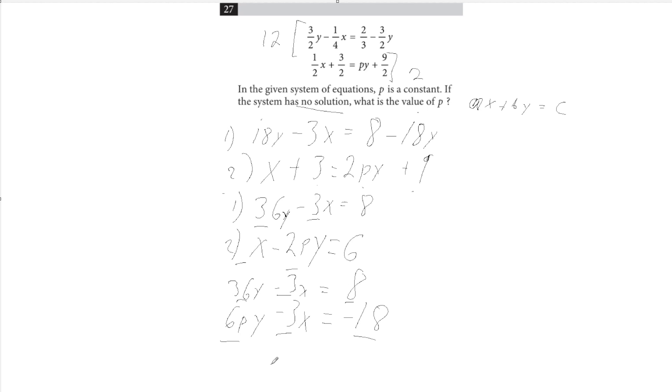So that just means p has to equal 6, because 6 times 6 equals 36, and then we have our matching slopes with differing y-intercepts.